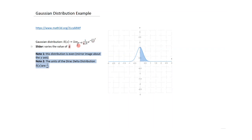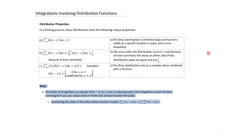This limiting exercise is used to define delta of x. Some properties of the Dirac delta functions: if we take the integral from minus infinity to infinity of delta of x minus x prime dx, we always get a value equal to 1. The Dirac delta function is infinitely large and zero width at a specific location in space, zero elsewhere. At x equals x prime is where the Dirac delta function becomes undefined.